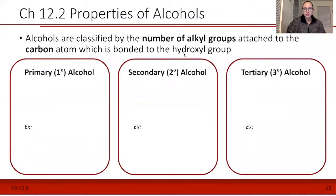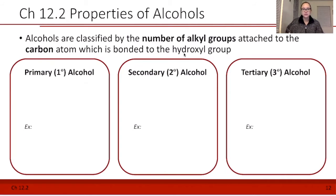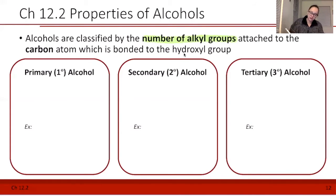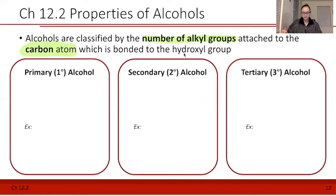In this section we're going to be talking about properties of alcohols — and technically ethers too. The first thing we need to do is talk about how we classify alcohols. Alcohols are classified by the number of alkyl groups attached to the carbon atom which is bonded to the hydroxyl group. It's important to really emphasize that it's the carbon atom the hydroxyl group is attached to, because we can get tripped up pretty easily on this.